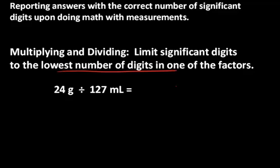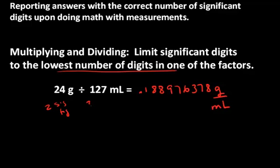And when I do the math, I end up with this number from my calculator, .188976378 grams per milliliter. That's read straight off my calculator, but according to the rules, I'm going to limit to the fewest number of sig figs in one of the factors. And in this case, 24 is two sig figs and 127 is three sig figs. So I'm going to have to limit it to two sig figs.